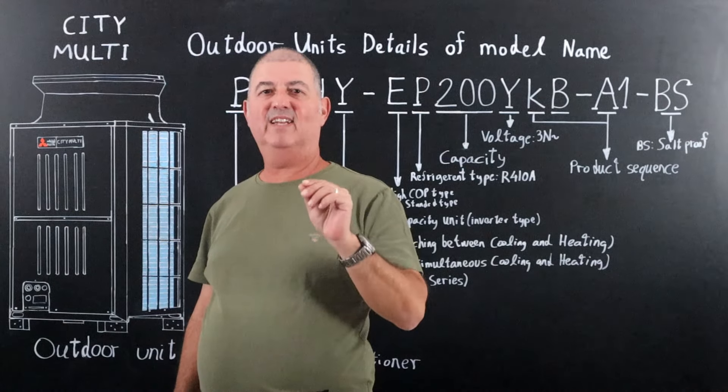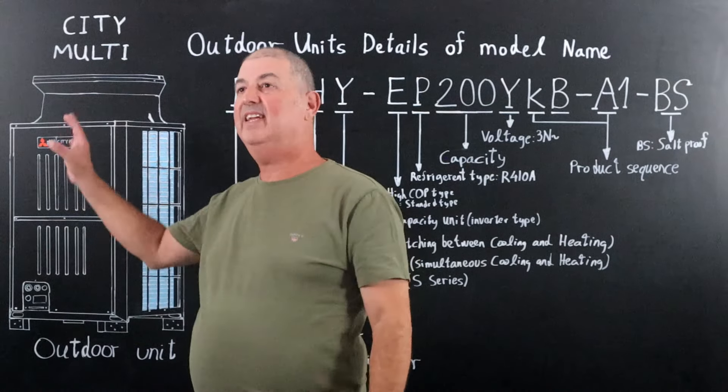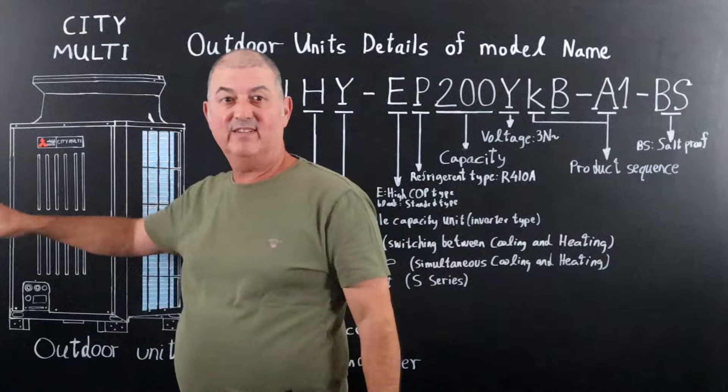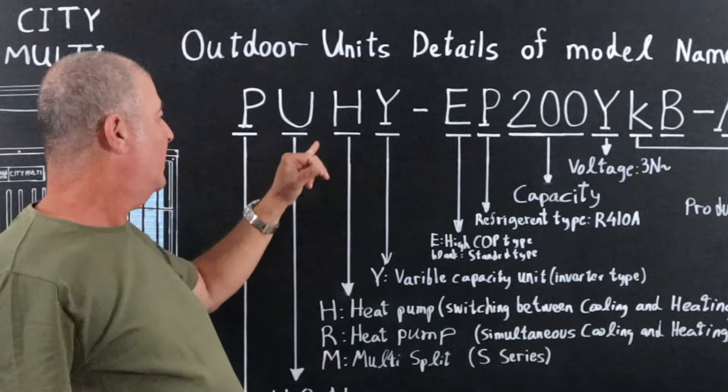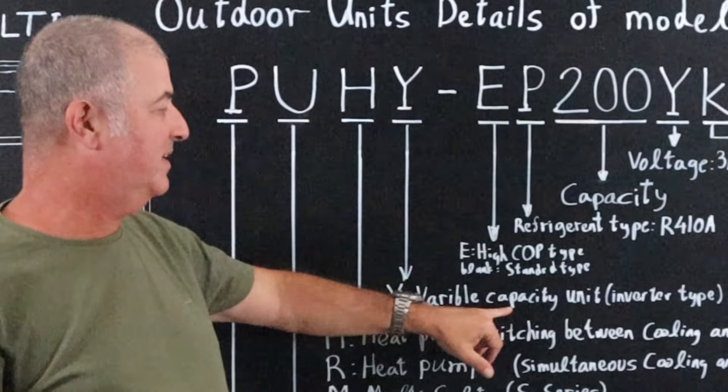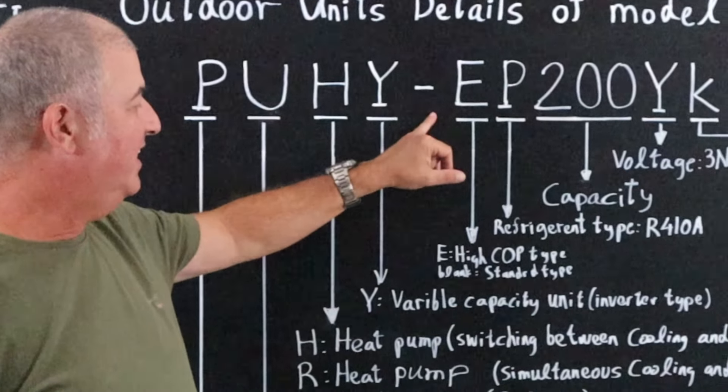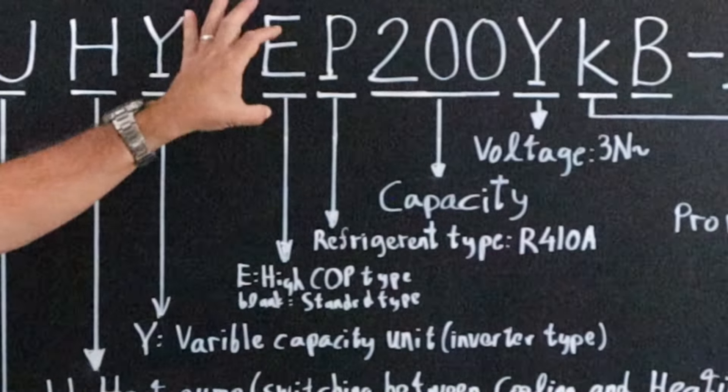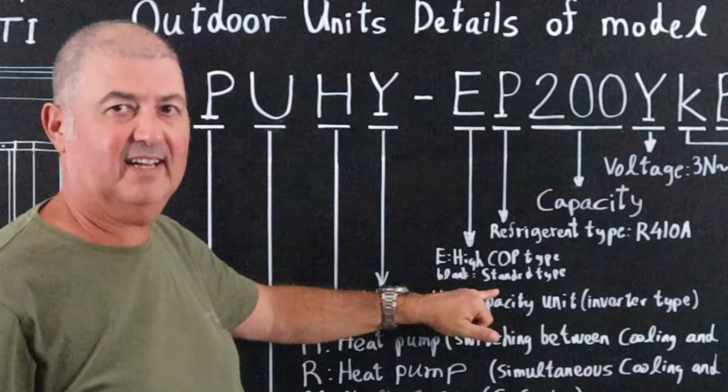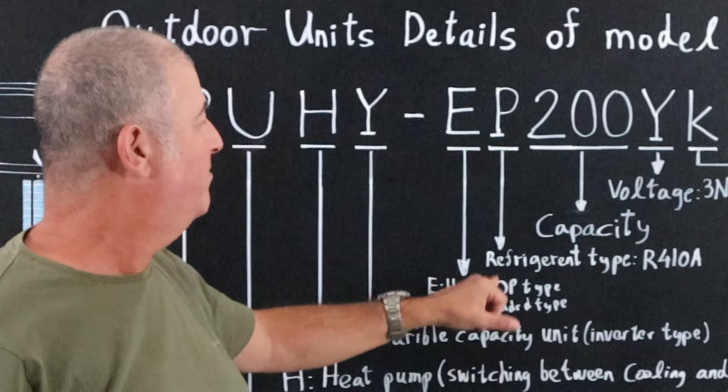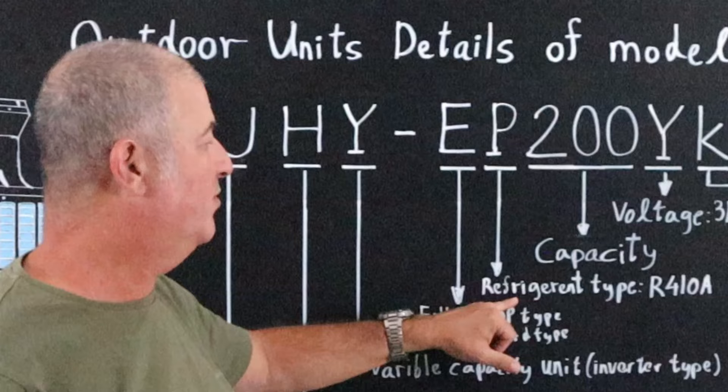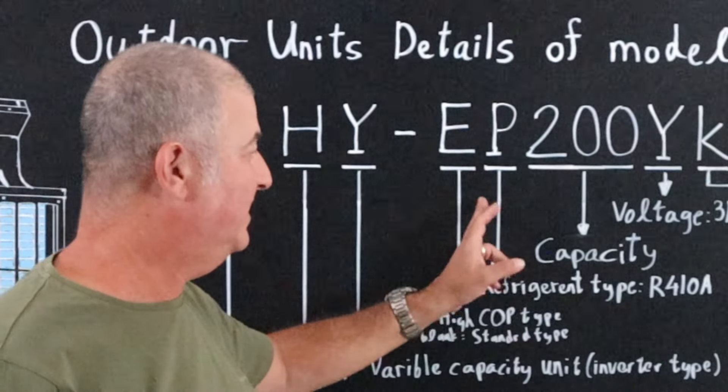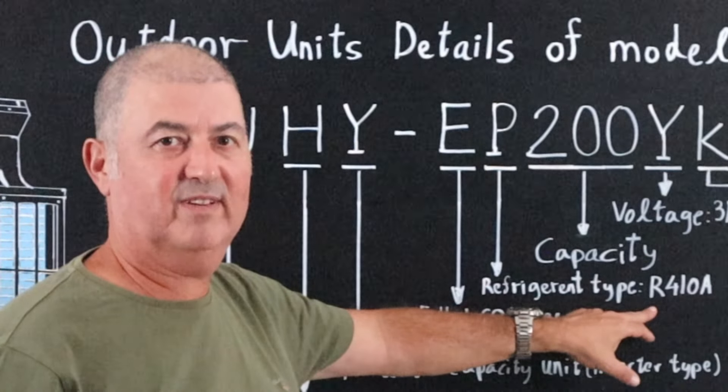So Y means variable capacity unit. E is for ICOP type. If it's blank, it's for standard type units. P represents the refrigerant type. In this case, this is R410A. By the way, you can download the complete option at the lesson below.